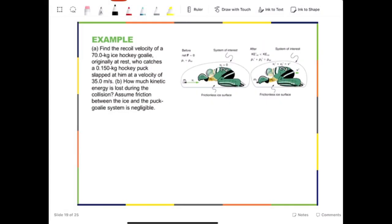Let us take a look at this example. There are two parts. Part A: find the recoil velocity of a 70.0 kg ice hockey goalie originally at rest, who catches a 0.150 kg hockey puck slapped at him at a velocity of 35.0 m per second.